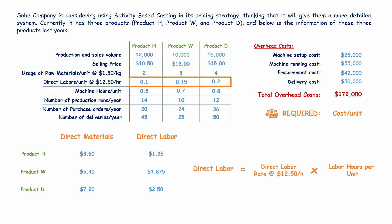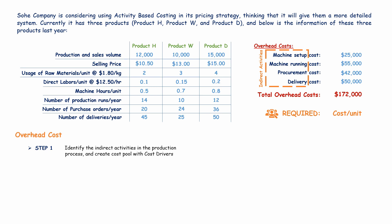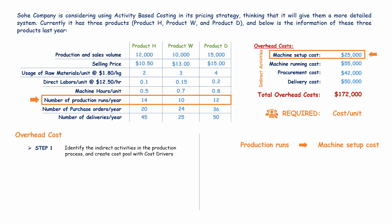Now we need to find the overhead cost for each unit. Using activity-based costing, step one is to identify the indirect activities in the production process and create a cost pool with the cost drivers. The indirect activities are machine setups, machine runs, procurement, and delivery. We identify the total cost drivers: machine setup is determined by production runs, giving us a total of 36 production runs across the three products.